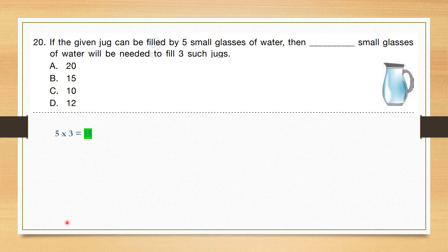Question number 20: If the given jug can be filled by 5 small glasses of water, how many small glasses will be needed to fill 3 such jugs? 1 jug requires 5 glasses, so 3 jugs will require 5 × 3 = 15 glasses. Correct answer is option B, 15.